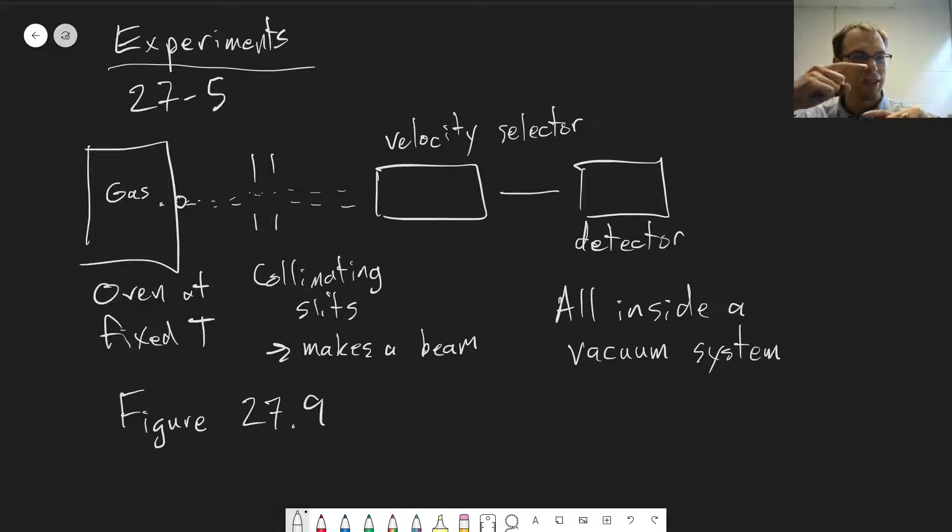What you have is a rotating set of disks with slits in them, and only specific velocities will make it through by changing how fast the disks are rotating. They're staggered from each other, so it has to make it through each disk to make it through the velocity selector.